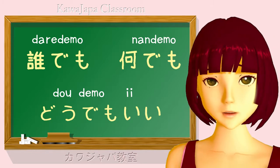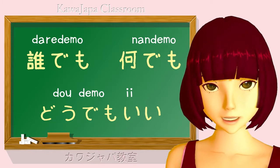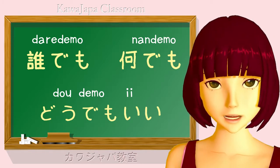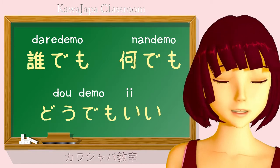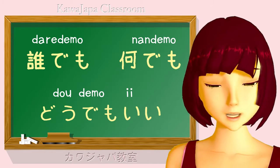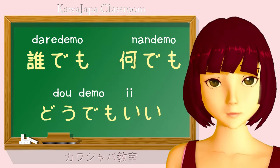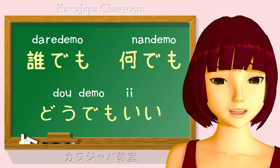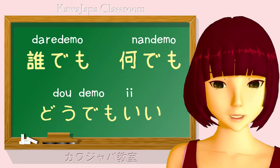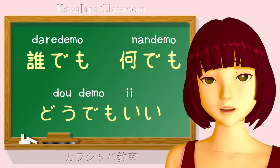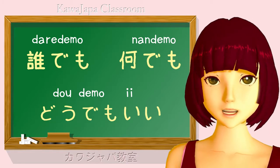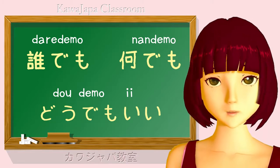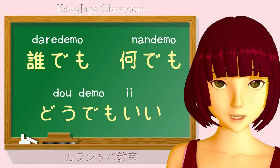We can notice that demo itself, which means but, works in the same way. We gather together the sentence before it and say even if that, this — as much as that, this. For example: she's pretty, but she's not very clever.